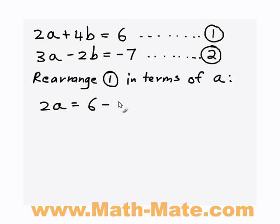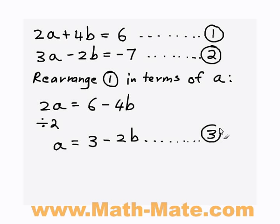First thing I can do is subtract 4b from both sides. So the 4b will disappear from the left hand side and it will be subtracted from the right hand side. So I get 2a equals 6 minus 4b. And now I just want to get a all by itself, so what I can do is divide by 2, and then I get just a equals 3 minus 2b. So we have rearranged equation 1 in terms of a, and I'm going to call this new equation equation 3.